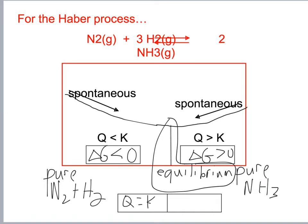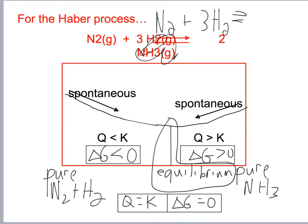At equilibrium: Q equals K and delta G equals zero. The reaction is N2 plus 3H2 gives 2NH3, which relates to the graph.